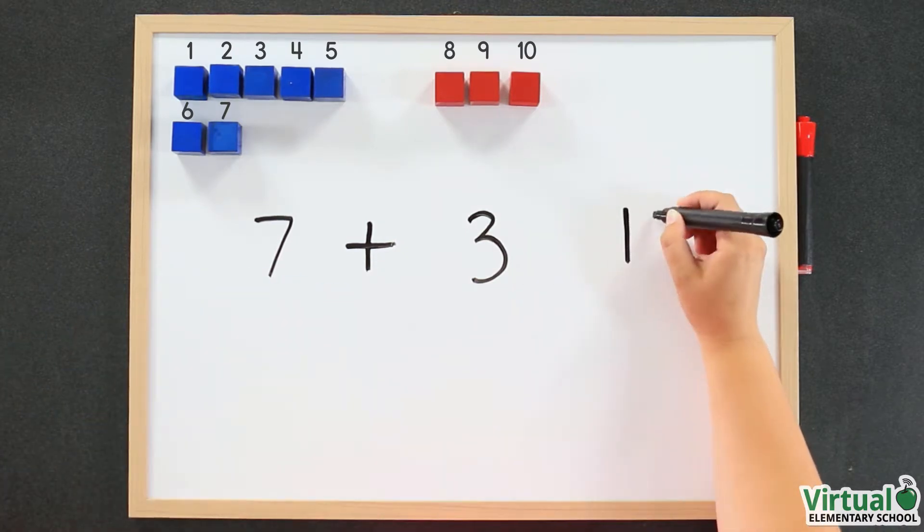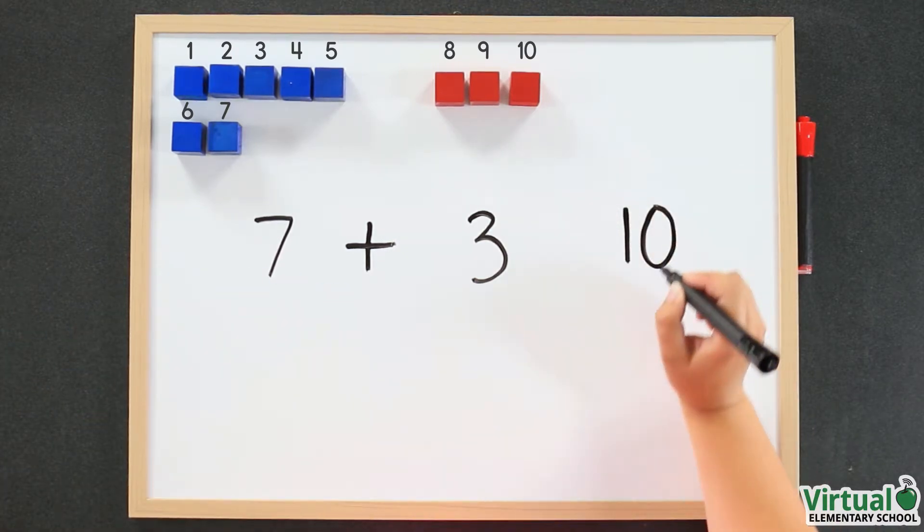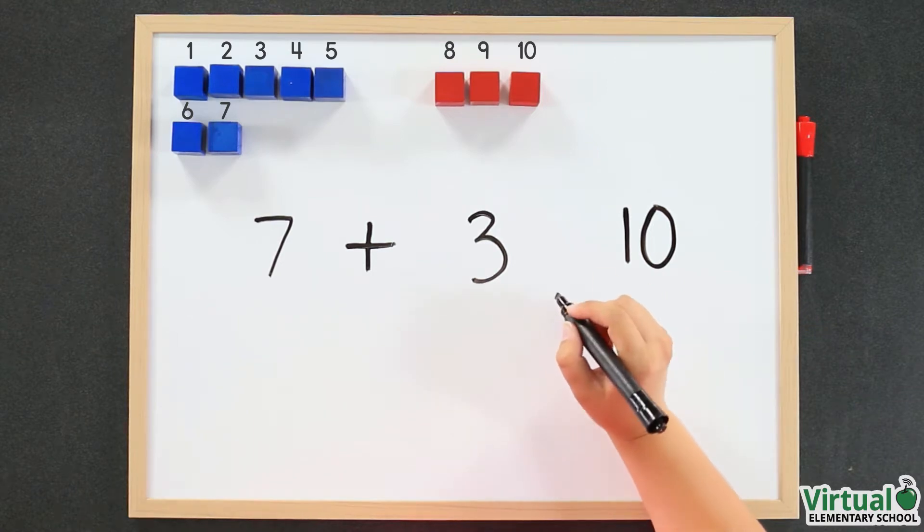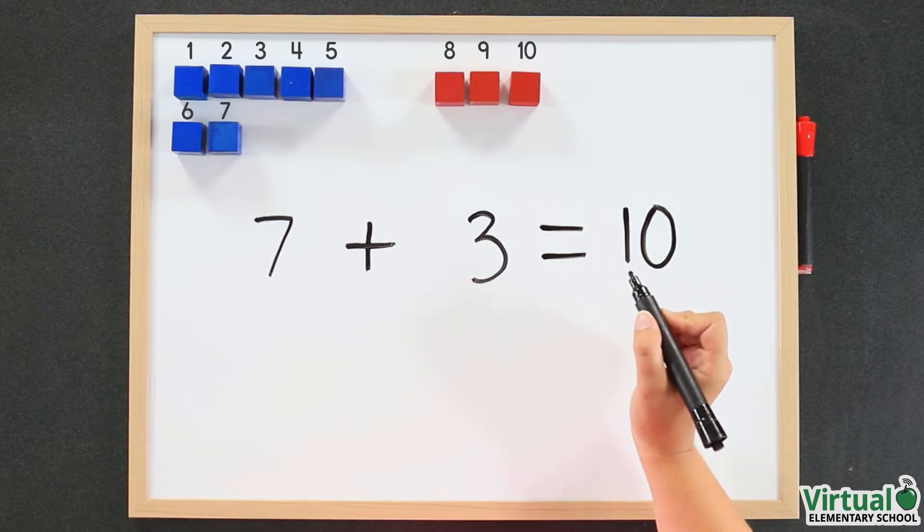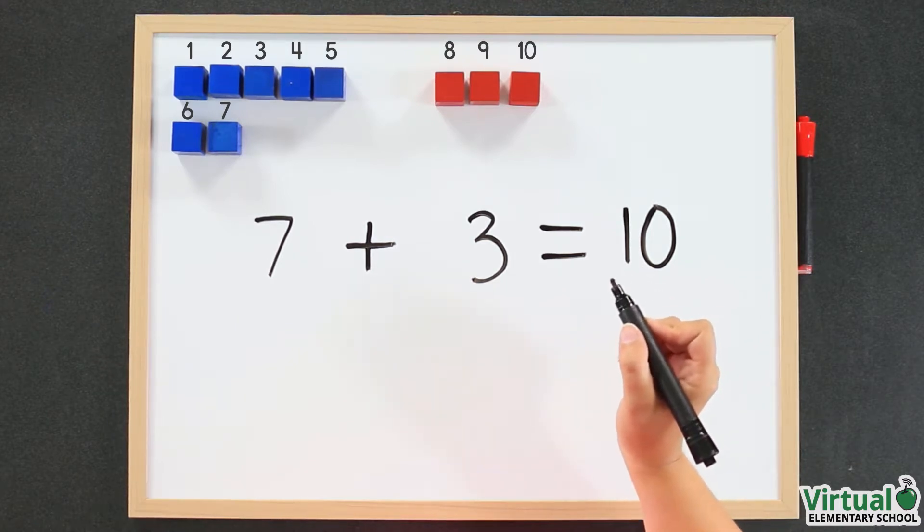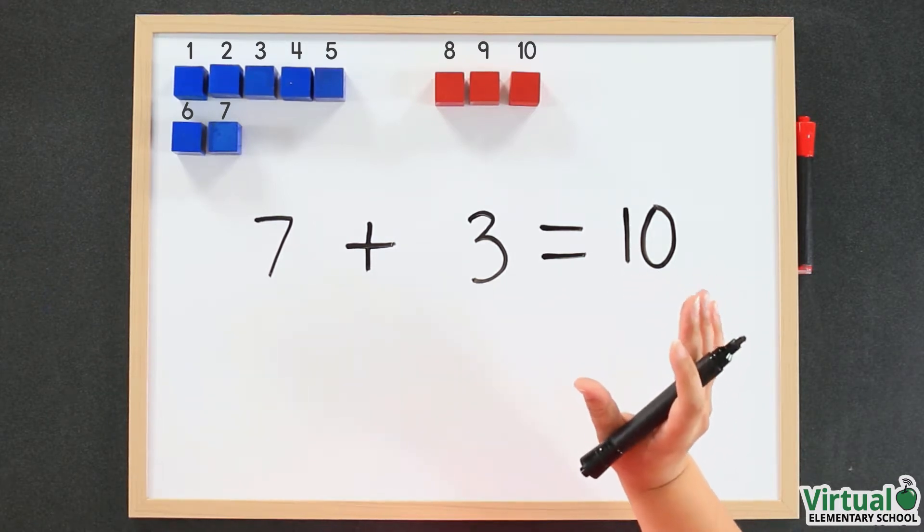Oh wait, we're still missing something. We need one more symbol. This symbol is called the equal sign. It tells us the amount on both sides is the same. Now we have everything we need to solve the problem.